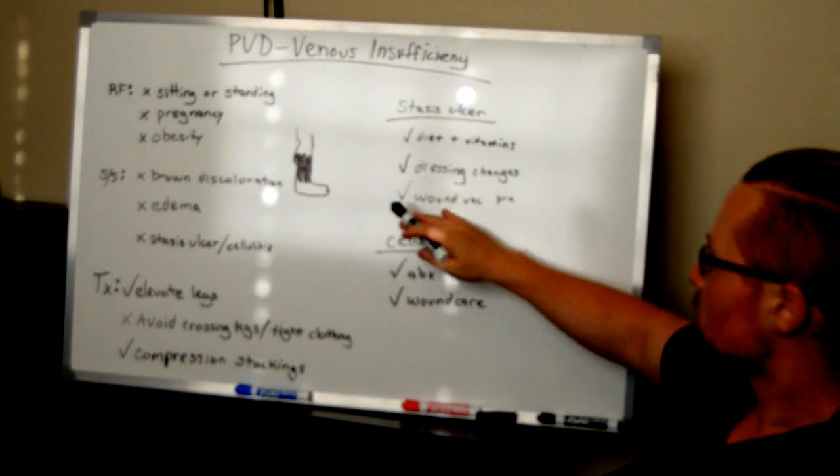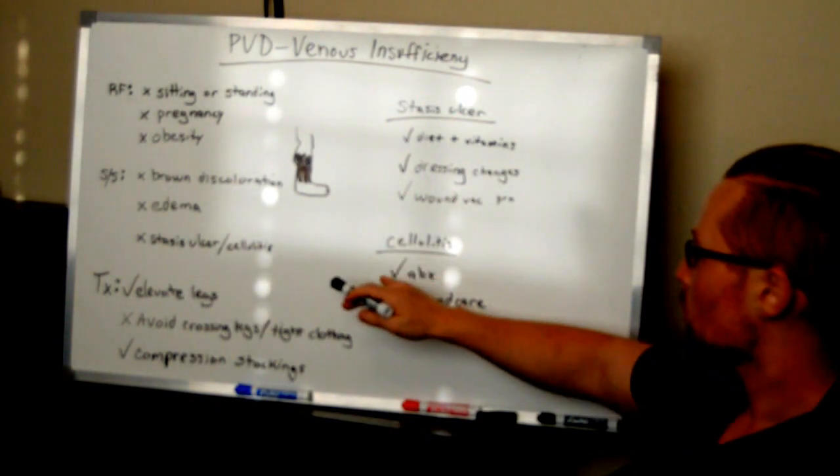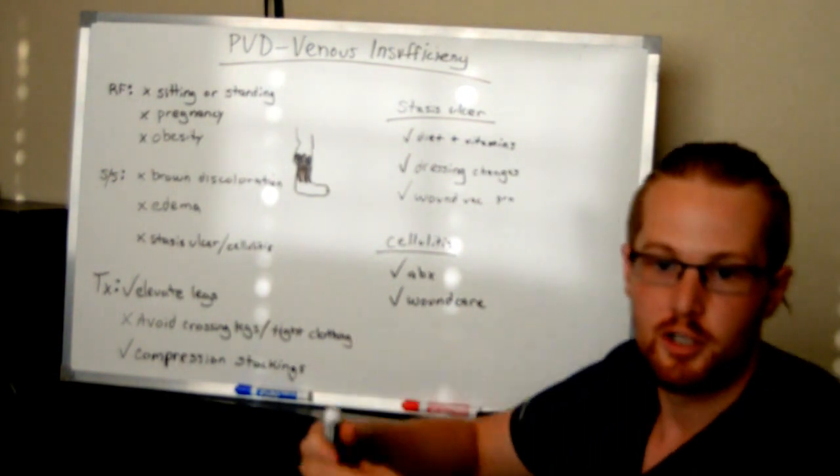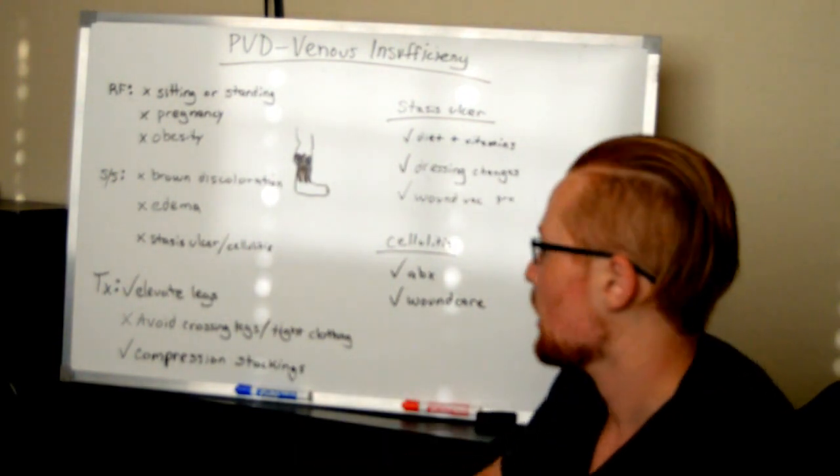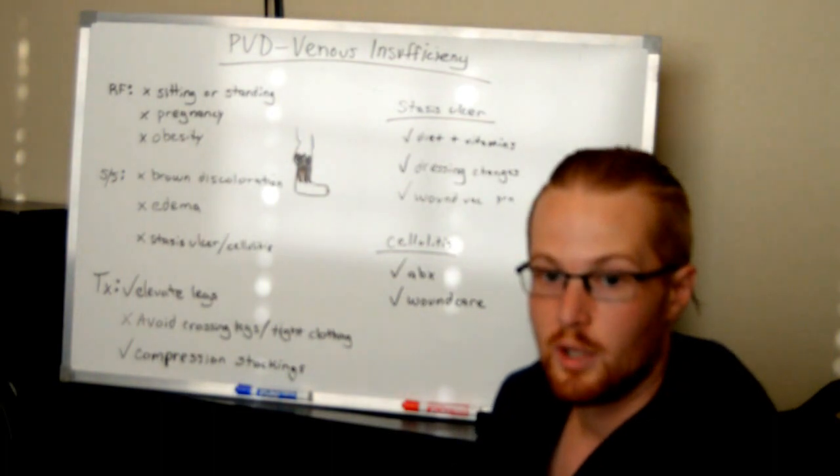With cellulitis, this is typically something where a patient will need IV antibiotics, then be discharged and go home with PO antibiotics. And then wound care if there's actually a wound there.